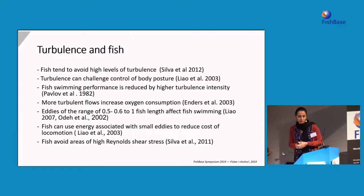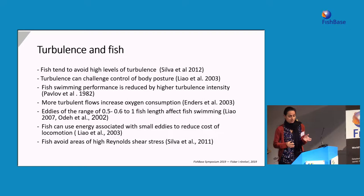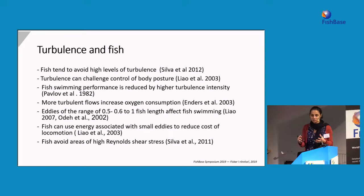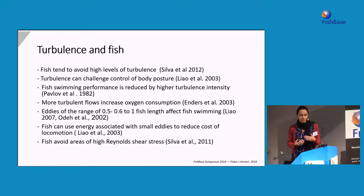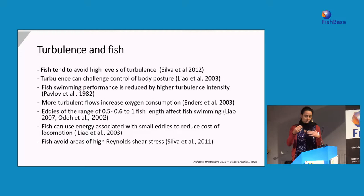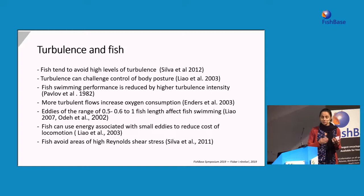As a summary: fish tend to avoid high levels of turbulence. Turbulence can challenge control and body posture. Fish swimming performance is reduced by high turbulence intensity — if velocity fluctuations are very high, swimming performance decreases and fish cannot move well. More turbulent flows also increase oxygen consumption. Eddy size will have a higher or lower effect depending on its relative size to the fish. Fish can use the energy associated with eddies, and they avoid areas of high Reynolds shear stress.